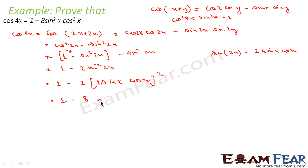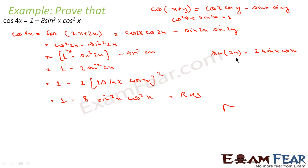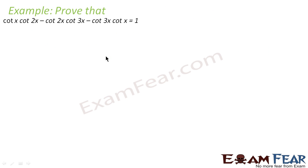This becomes 1 minus 8 sin squared x cos squared x, and this is our RHS. So cos 4x is proved equal to 1 minus 8 sin squared x cos squared x. The key strategy was: we saw that LHS had 4x and RHS had x, so we broke 4x first into 2x plus 2x, and then 2x into x plus x.